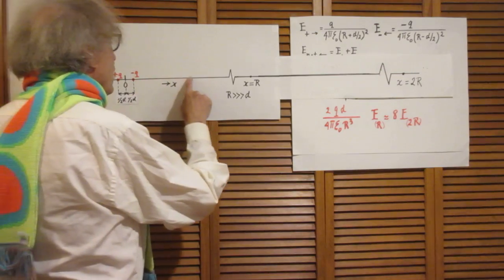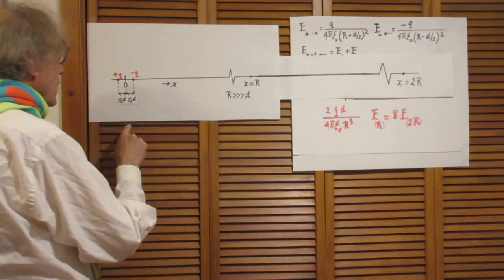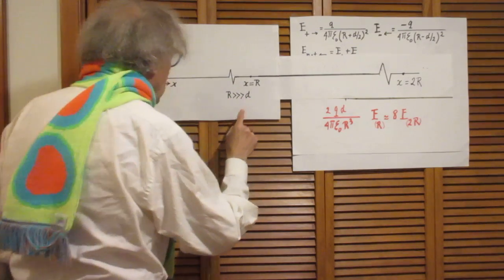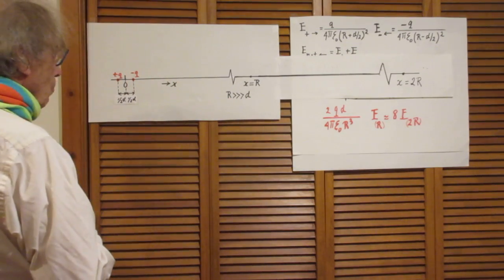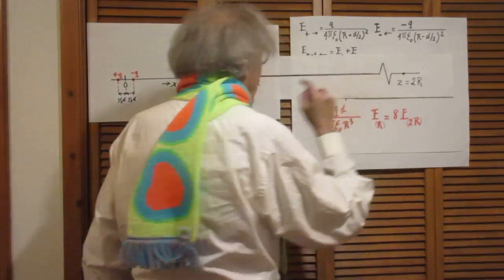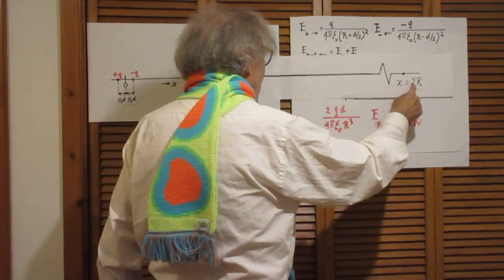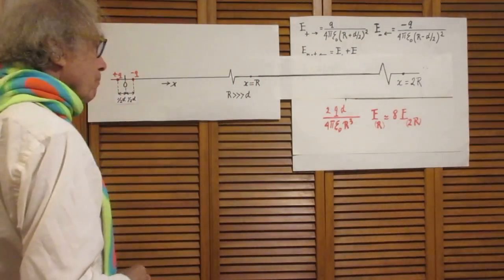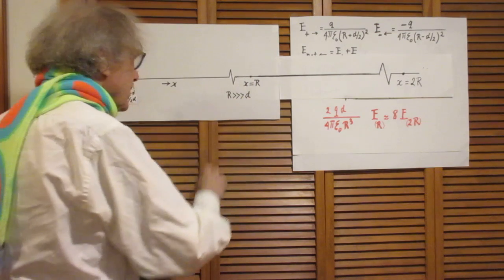All the x-axis very very far away is a point capital R and capital R is way larger than d. And even further away there is a point on the x-axis actually falls too high, twice as far away as this point.